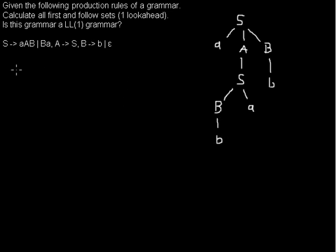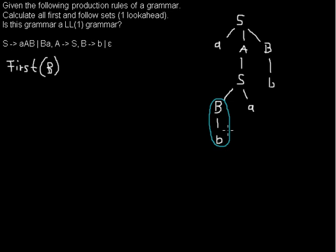First I want to calculate the First set of B. The First set contains all symbols that are terminals and that are leftmost under this variable in a tree, or leftmost after that in a derivation. So the First set of B — you can look at the grammar — contains small b and the empty string epsilon. There are no other possibilities for terminals that can be derived from B at the first place.